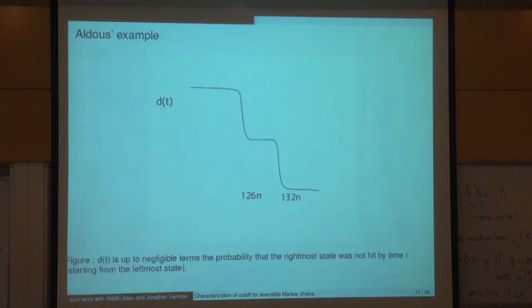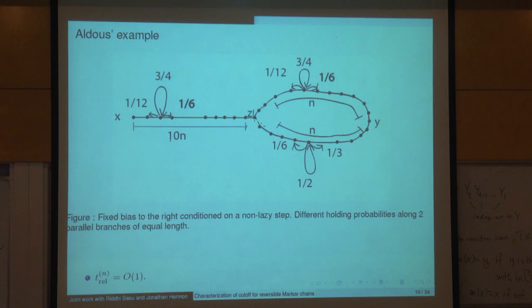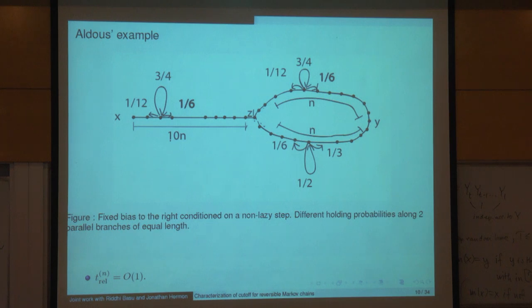From this, it's not hard to see that the profile of the distance to stationarity is near 1 until about time 126N, then drops. But there's still a possibility of moving on the top, so you have a second drop at time 132N. These parameters are somewhat arbitrary, but the idea is that there are two distinct drops — there's no sharp cutoff.